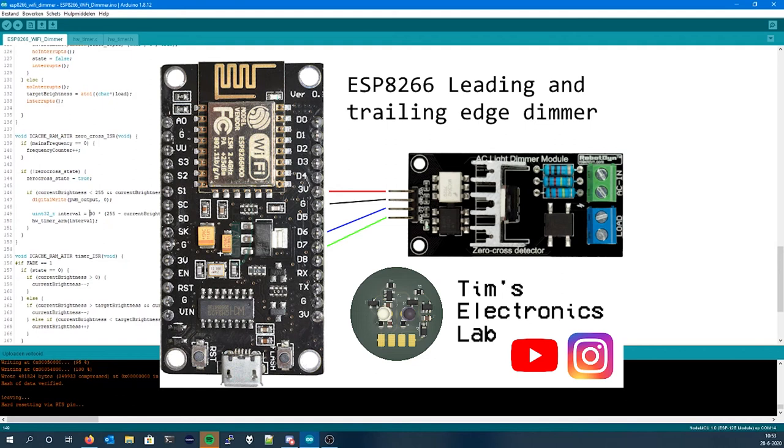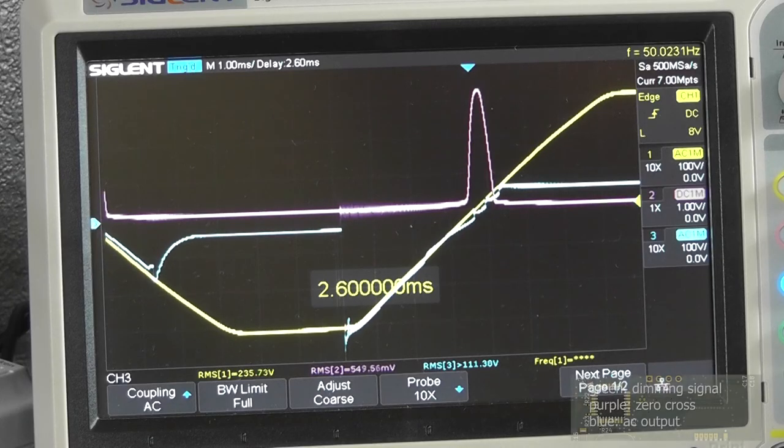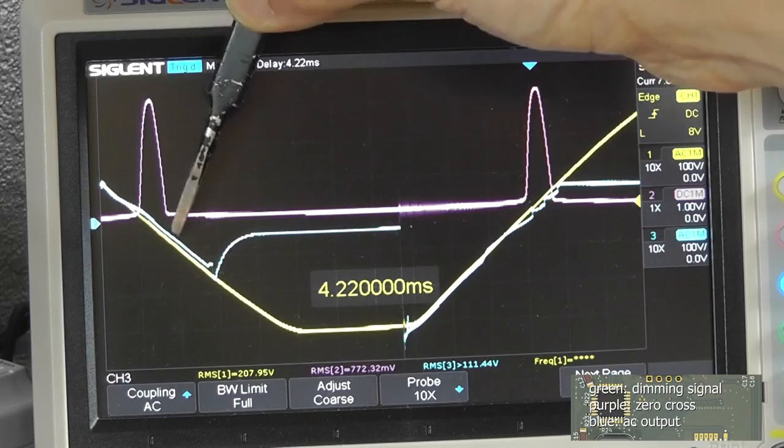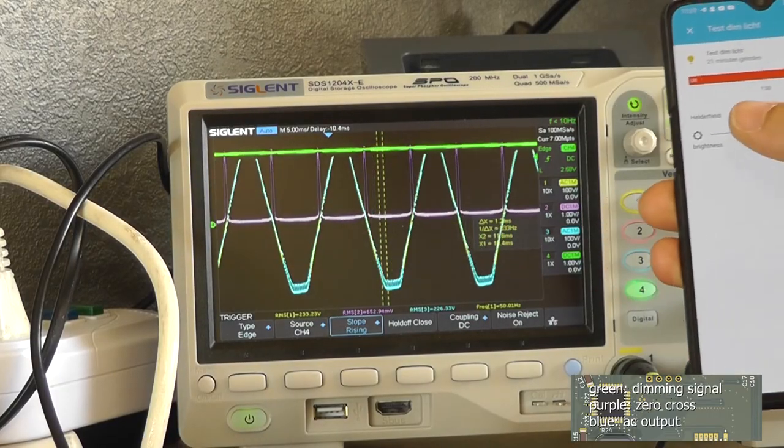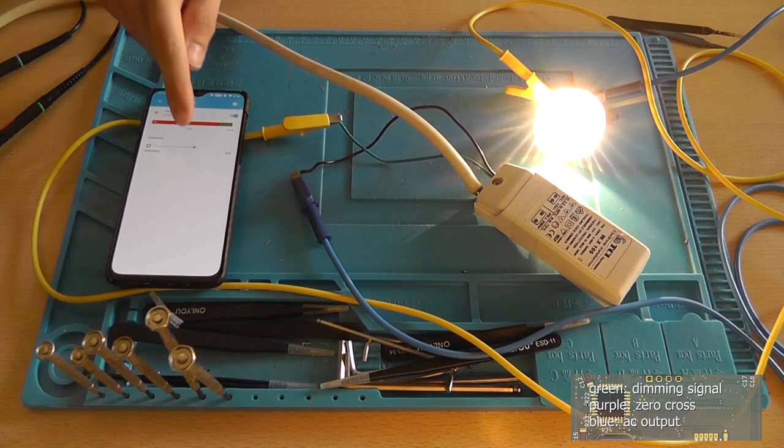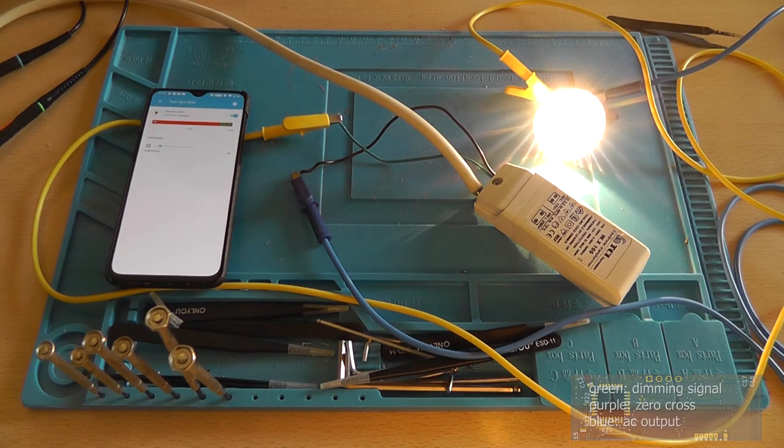After attaching everything to the board, it was time to swap from leading edge to trailing edge in order to allow LED lights to be dimmed. Here you can see a regular halogen bulb getting dimmed.